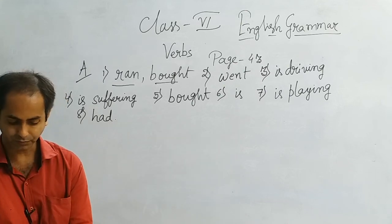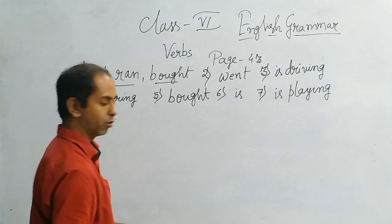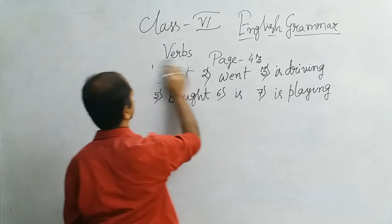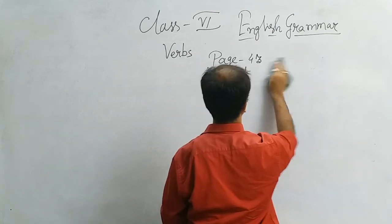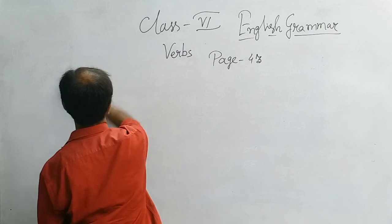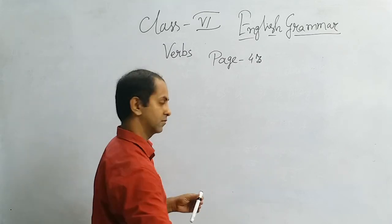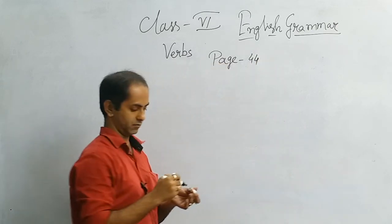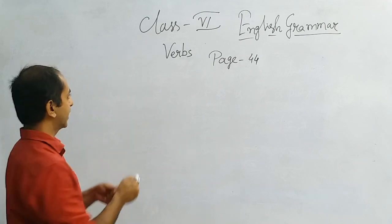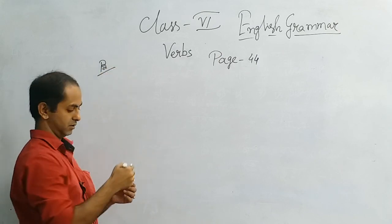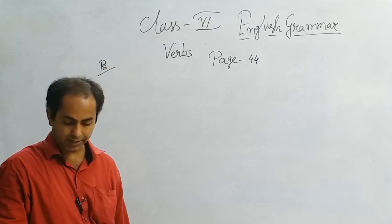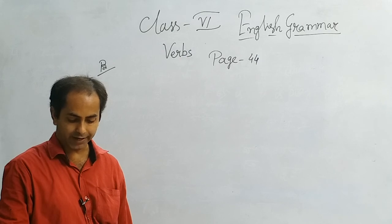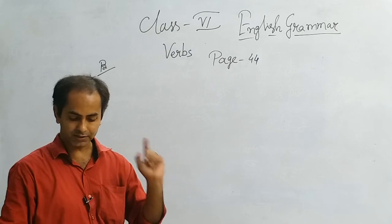Come to the next page, page number 44. Exercise number B: Read the following sentences, underline the verb and circle the object in each sentence. A few sentences have both direct and indirect objects. You have to underline the verb and circle the object.